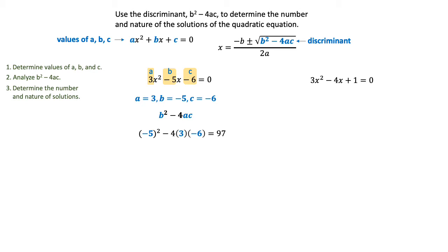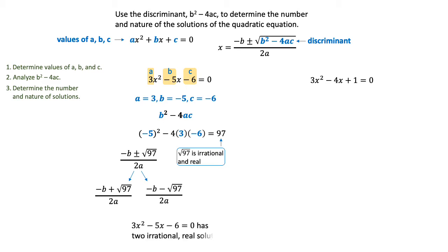Remember, this is the square root part of the equation, and √97 is irrational and real. This tells you what your solutions will look like. When you put +√97 and -√97 into your formula, the equation has two irrational real solutions.